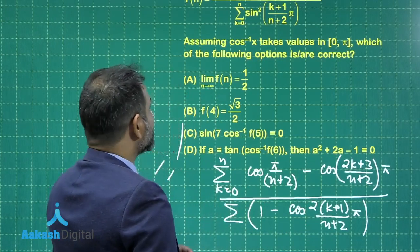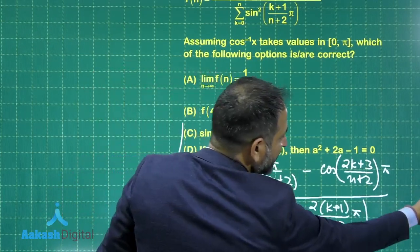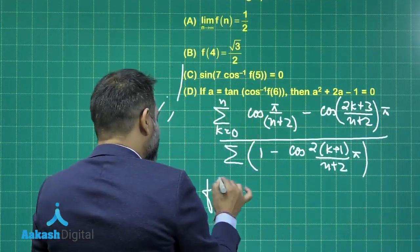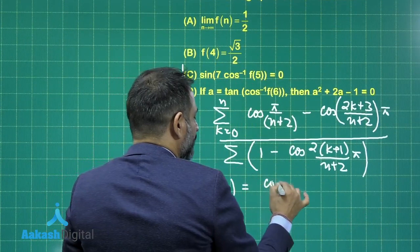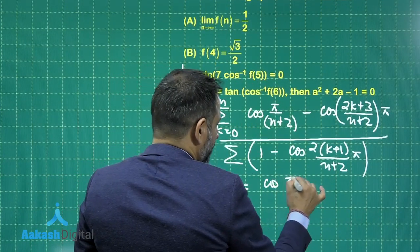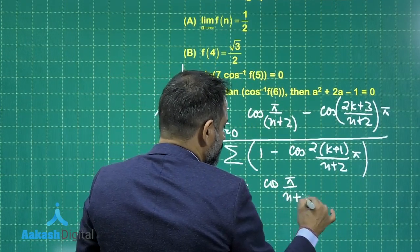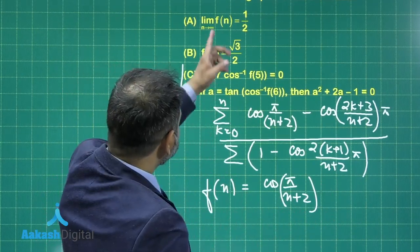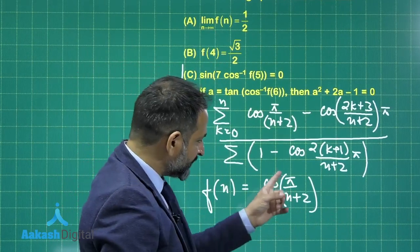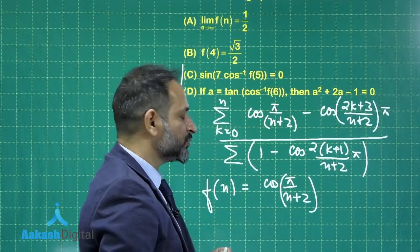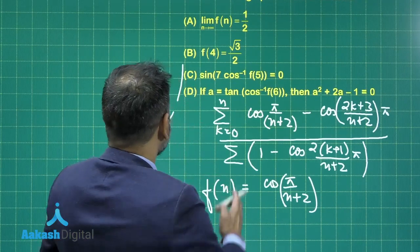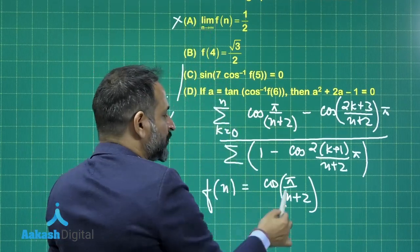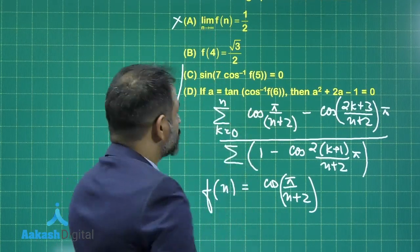While calculating this summation, f(n) will be equal to cos of π/(n + 2). We can check which of the following options are correct. As n tends to infinity, this will become 0, so the value will be equal to 1 — the first option is incorrect. At n equals 4, this will be π/6, so the value will be √3/2.